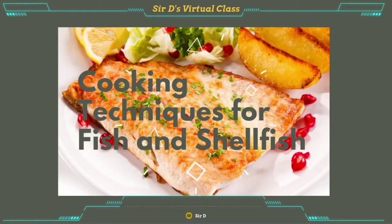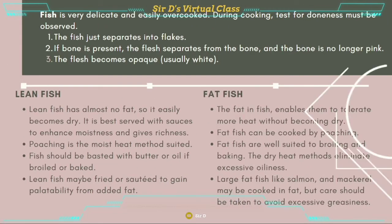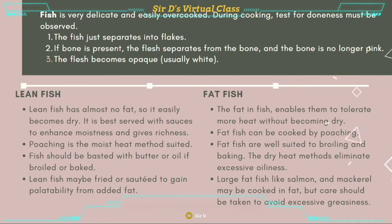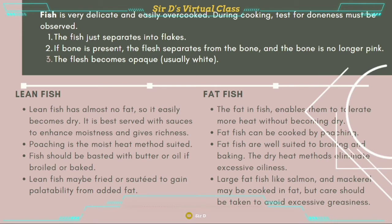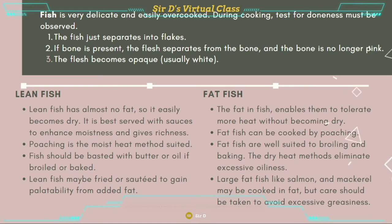Now let's discover cooking techniques for fish and shellfish. Fish is very delicate and easily overcooked. During cooking, tests for doneness must be observed through the following: the fish just separates into flakes; if bones are present, the flesh separates from the bone and the bone is no longer pink; and lastly, the flesh becomes opaque, which is usually white in color. Those three items mentioned will tell the doneness of the cooked fish.